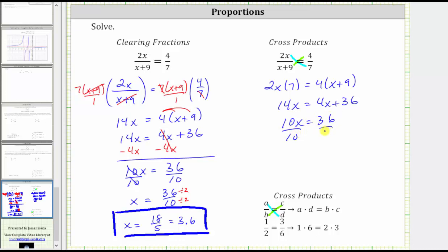Divide both sides by 10, just like we did over here. Simplifying, we have x equals 36 tenths, which again we know simplifies to 18 fifths or 3.6.